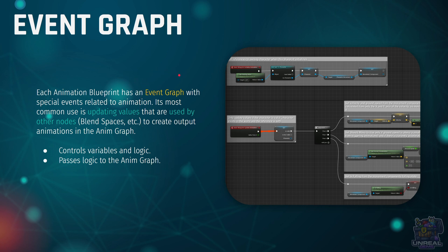Next up we have the Event Graph, which is going to have special events related to animation, like Initialize Animation or Update Animation. These events are going to fire whenever something happens related to their names — for example, when we update an animation frame, this is going to fire and execute things, allowing us to update the variables we have created in the Anim Blueprint with values that come from the character or wherever we want to read them. Then those variables are going to be used by other nodes, like Blend Spaces, to make decisions and change animations based on them and select a final output pose for our Skeletal Mesh.